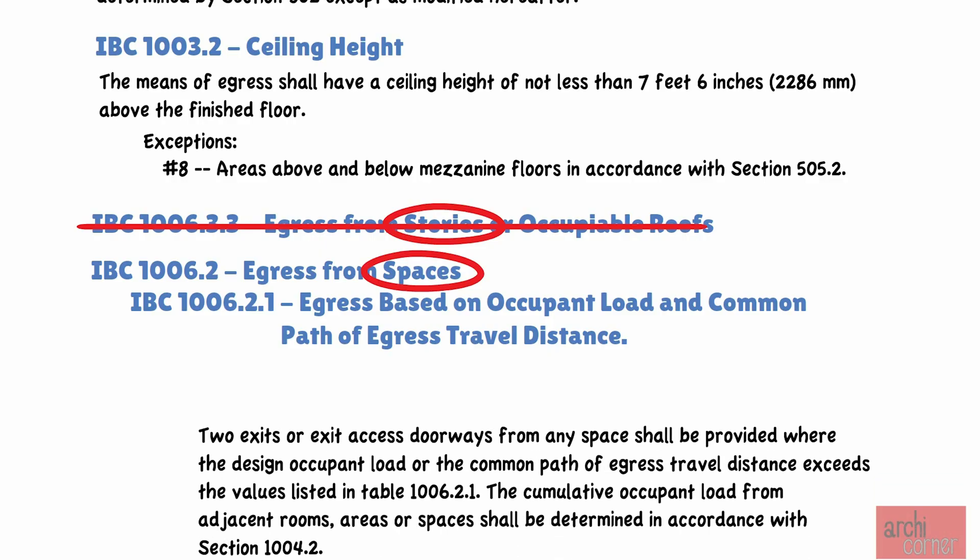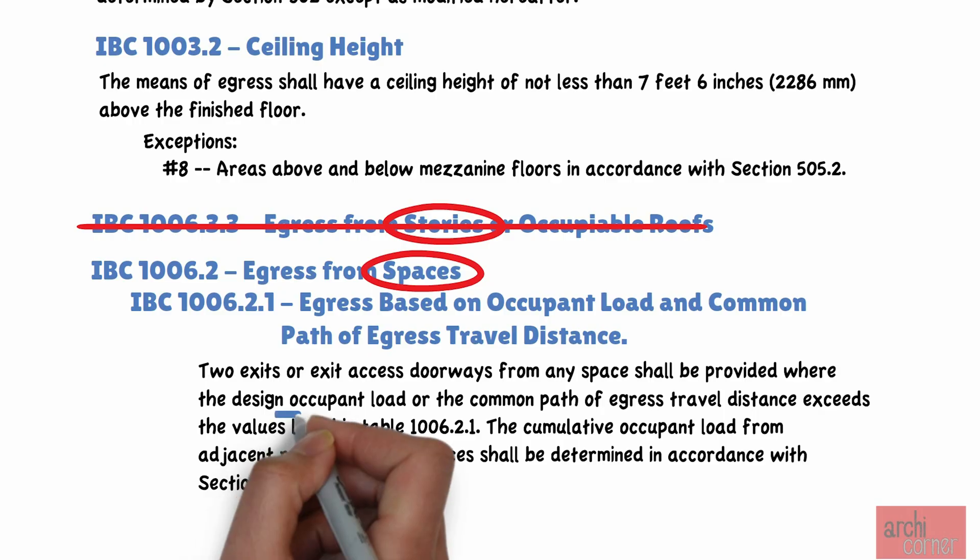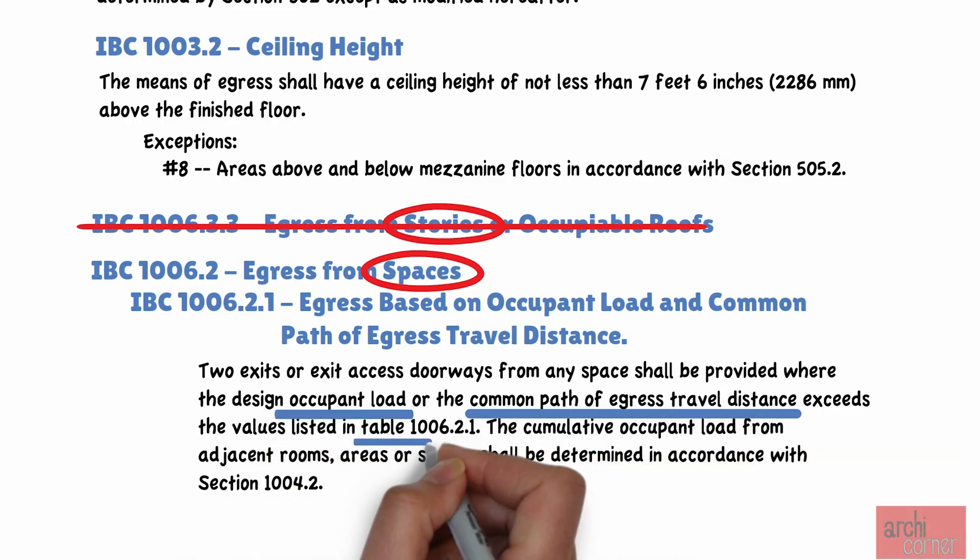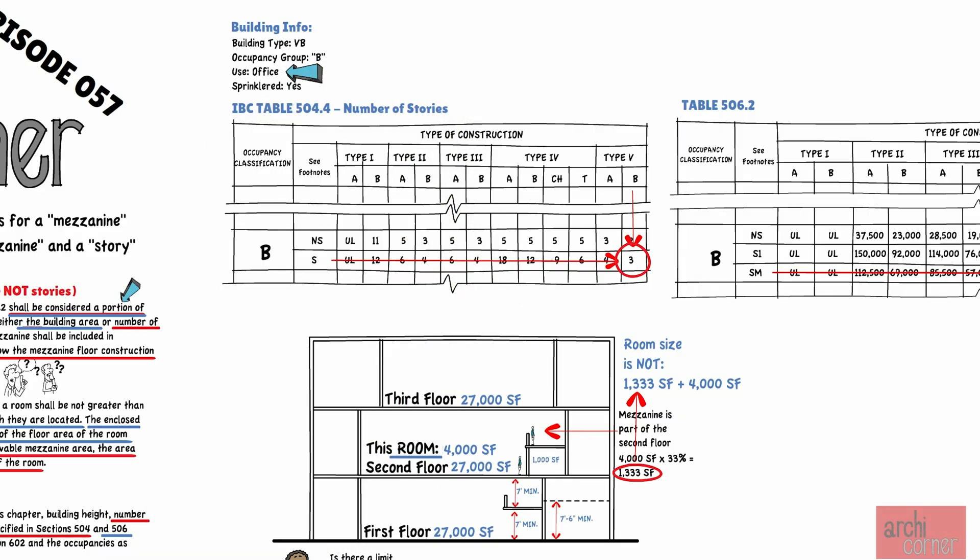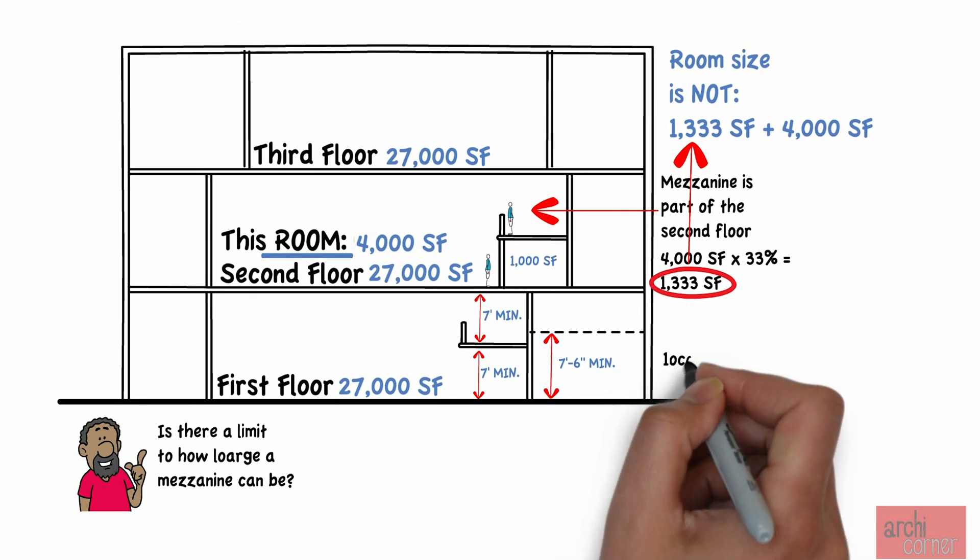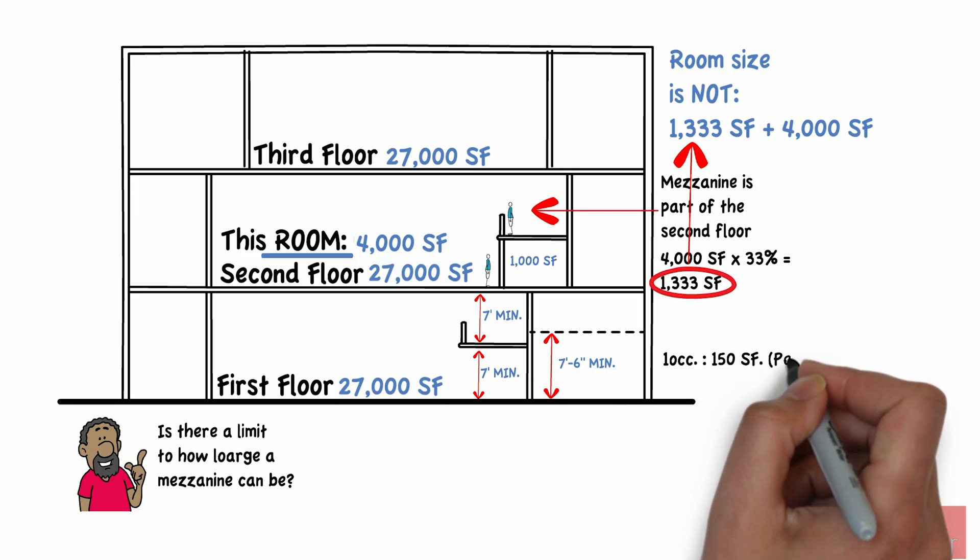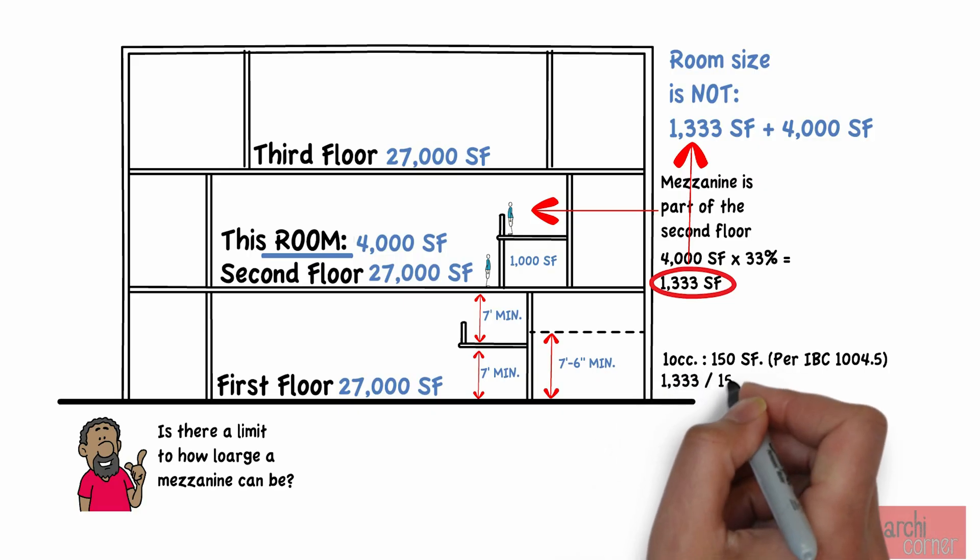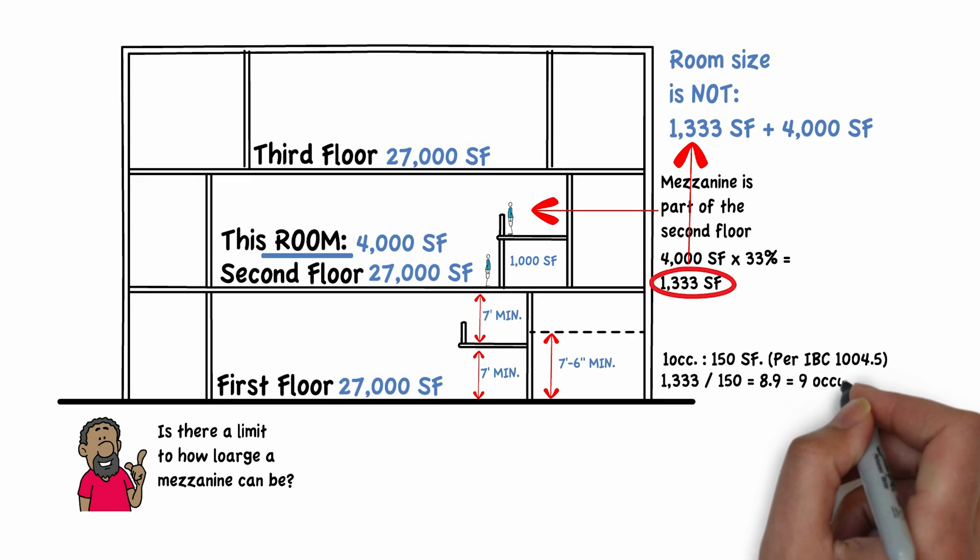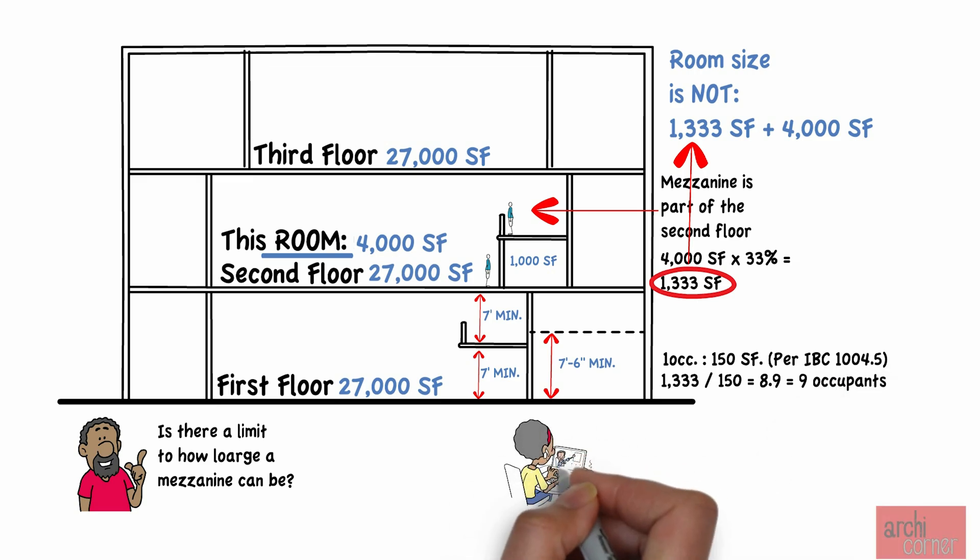Which in short, this code section states that the number of exits is based solely on occupant load and the travel distance noted on table 1006.2.1. Therefore, as long as you don't exceed the occupant load on the table or the travel distance, you are not required to provide two exits. In our example, office spaces are considered business areas. And since business areas are to be calculated at one occupant per 150 square feet per table 1004.5, and assuming our mezzanine is 1,333 square feet, then we have nine occupants once we round up. If you want to learn more on how to calculate occupant loads, check out Archicorner episode number 10.